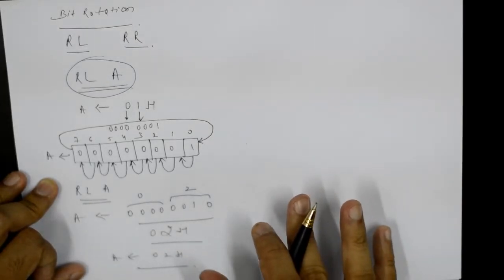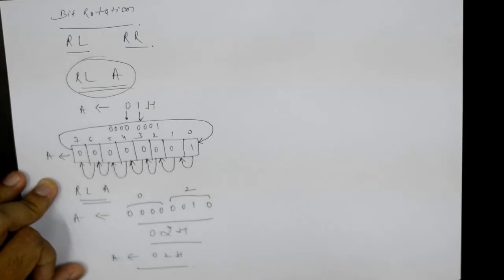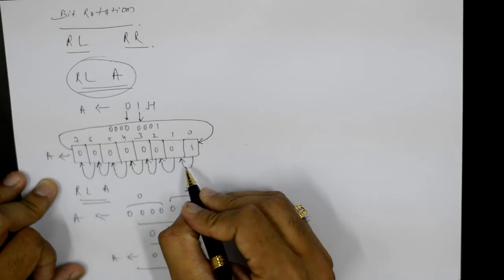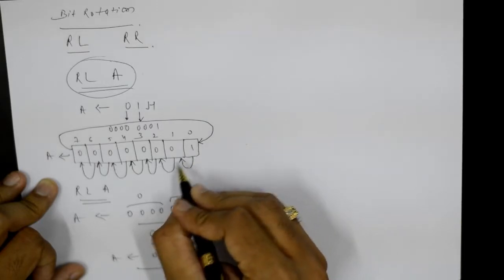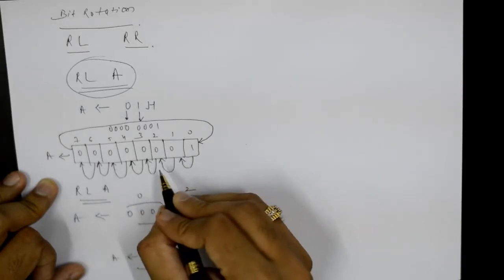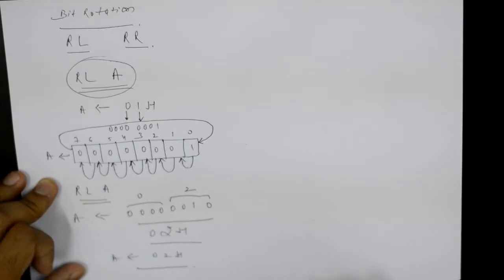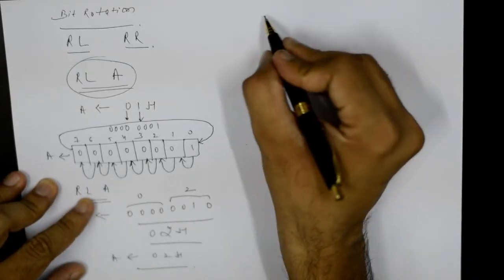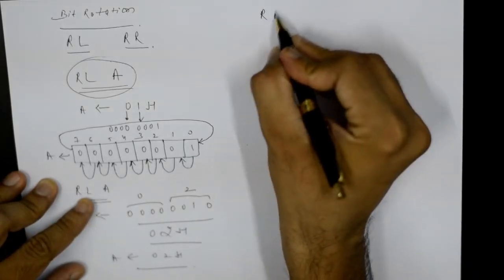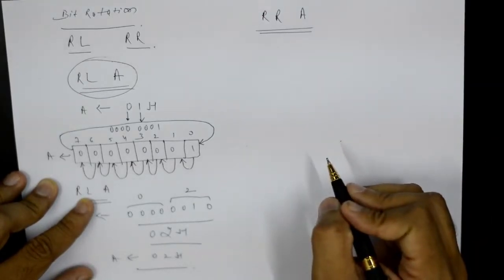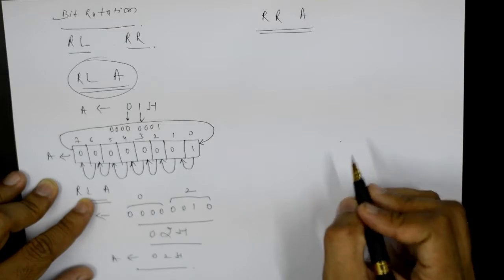No flags will be affected by this rotate instruction RL A. It's just simple rotation taking place by one bit position on the left side, cycling the data back. In a similar way, RR A operates — that is, rotate right the contents of the accumulator by one bit position.